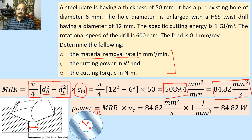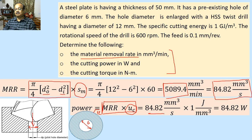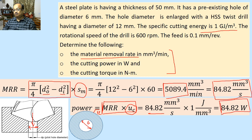Now let us calculate power. Power in drilling can be calculated as material removal rate multiplied by specific cutting energy. When using this formula, we assume the power requirement for feeding the tool in the axial direction is negligible — similar to how the power required for the longitudinal feed direction in turning is very small. So multiplying MRR by UC: 84.82 mm³/s × 1 joule per mm³ gives a cutting power close to 85 watts. Note that 1 gigajoule per meter cube is numerically equal to 1 joule per millimeter cube.